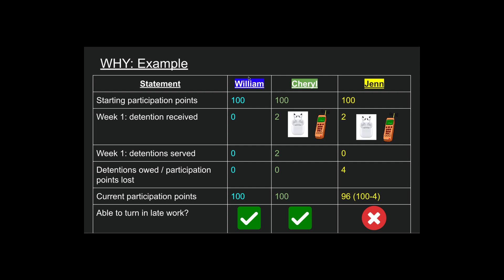Here's an example. My dad William, my mom Cheryl, my wife Jen — they all start out with 100 points. During their first week of school, William does nothing. Cheryl is using her AirPods and phone, same with Jen, so they each receive one detention for each of those. Well, Cheryl served her detentions, so at the end of the week she doesn't owe any detentions and didn't lose any participation points.